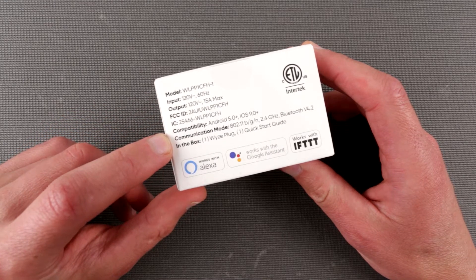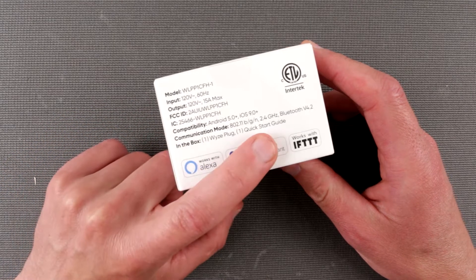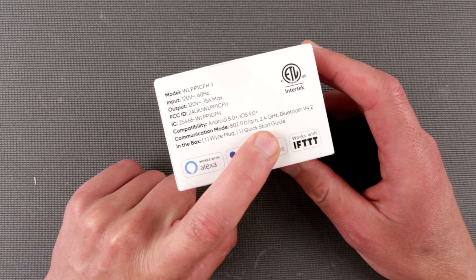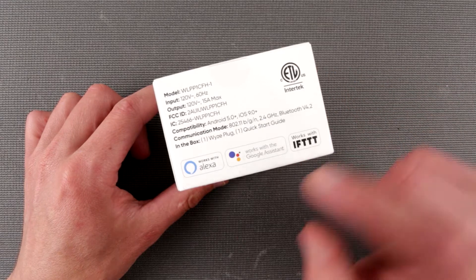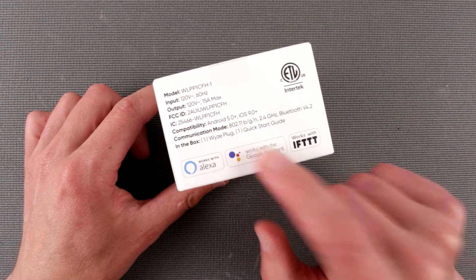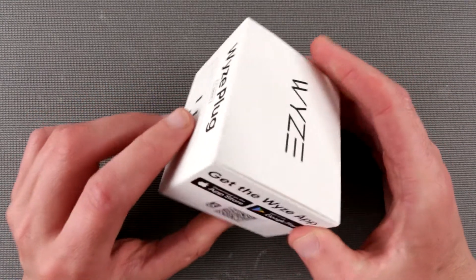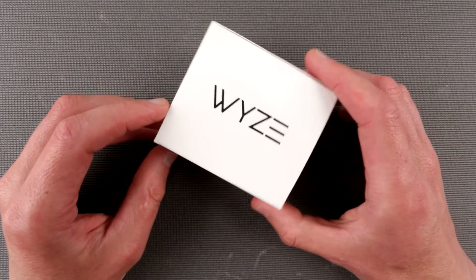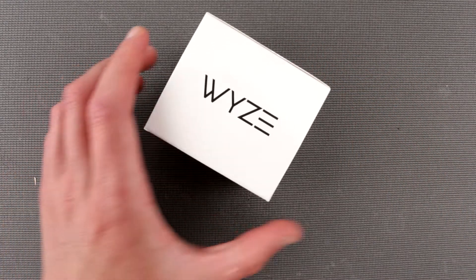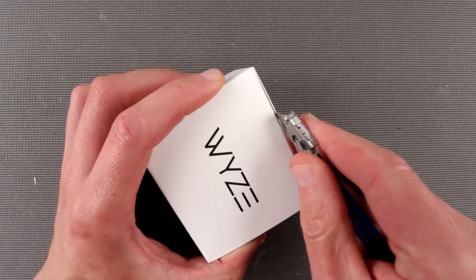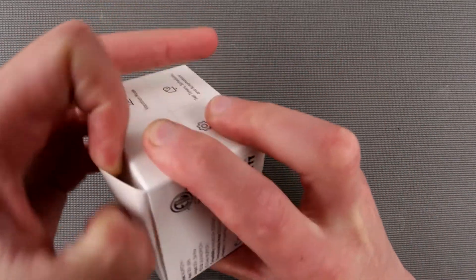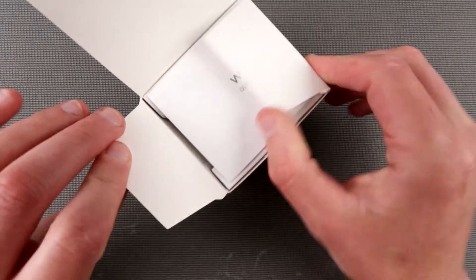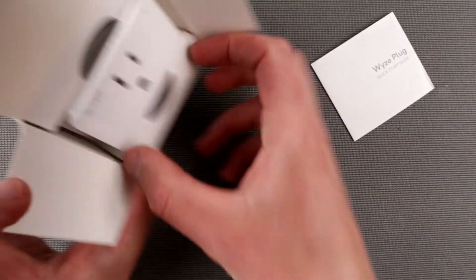It supports only 2.4 gigahertz Wi-Fi and Bluetooth. What's included: Wyze plug and quick start guide. Okay, let's take a look what the heck is inside. Let's unbox it. The unboxing will be pretty straightforward - here's the quick start guide.